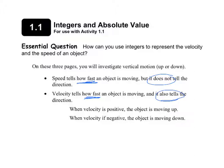When velocity is positive, an object is moving up. When velocity is negative, the object is moving down.